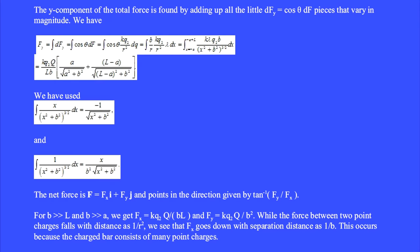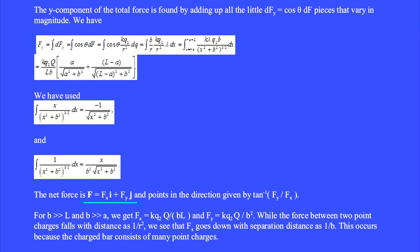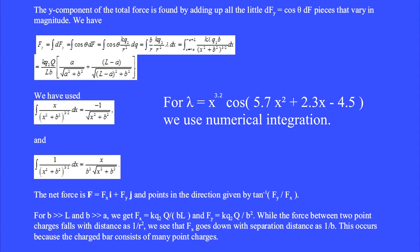The y component of the total force is found by adding up all the df sub y equals cosine theta times df pieces. We have f sub y equals the integral of cosine theta times KQ2 over R squared dq, where cosine theta is B over R and dq equals lambda dx. When lambda is constant, we use the standard antiderivative to obtain this result. The net vector force F equals f sub x i hat plus f sub y j hat and points in the direction given by tan inverse of f sub y over f sub x. If lambda is a complicated function of x, then we use numerical integration.